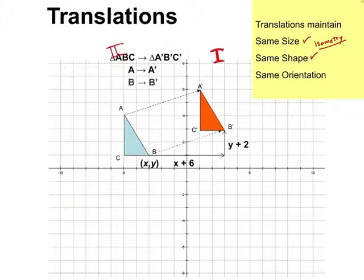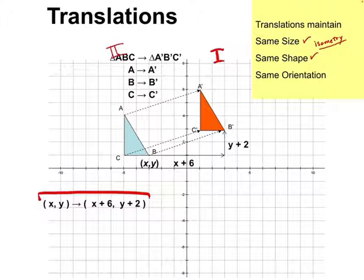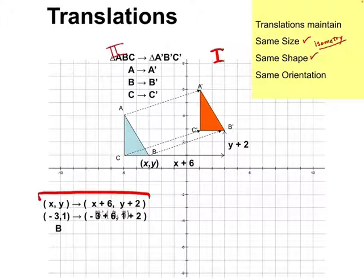In this translation, we take all of the original points of triangle ABC and turn them into points called A prime, B prime, and C prime — we put those little prime marks above ABC. In this example, we move six units to the right and two units up, and we can make a rule out of that to describe what happens to every point (x, y) on our original triangle. So if point B is (−3, 1), we can find B prime by adding 6 to the x and adding 2 to the y to find the new coordinates of B prime.